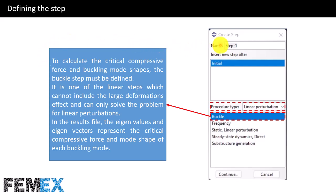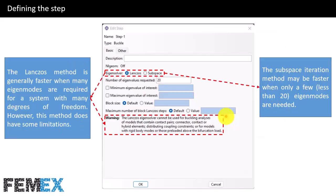Here I want to create step 1. I have set the procedure type to linear perturbation and selected the buckle step. In the buckle step, we must select between two eigen-solvers: Lanczos and subspace. The Lanczos method is generally faster when many eigen-modes are required for a system with many degrees of freedom; however, this method does have some limitations.